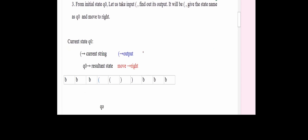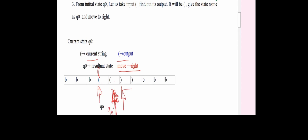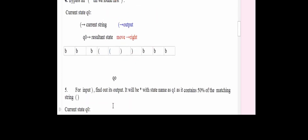Now we will go step by step, writing our string on the tape. Q0 is the initial state, and here the pointer is pointing to the opening brace. Our algorithm is to bypass all opening braces until we reach the closing bracket. So at Q0, on an opening brace, the output is as-is and we move right. The pointer moves to the next cell and the state remains Q0 because we are bypassing all opening braces.